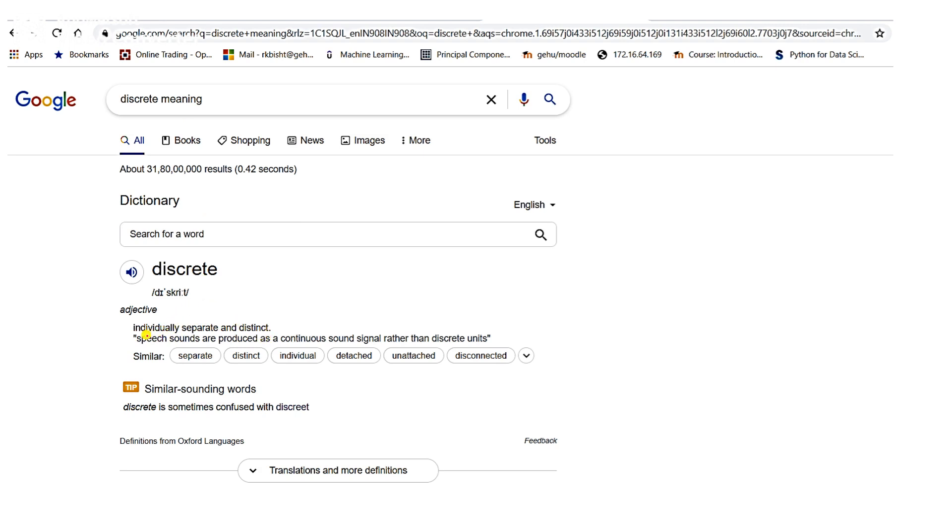For example, if you talk about integers 1, 2, 3, 4, these are discrete objects.